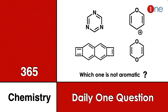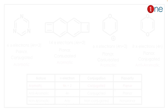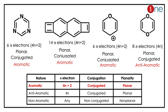Welcome to One Chemistry. This is the 365 Chemistry Series — one daily question for you. Here, four different compounds are given; all are conjugated type systems. You have to find which one is not aromatic. You have to use the Hückel rule to find aromaticity. According to the Hückel rule, you need to find 4n+2 π electron conjugation and planarity.